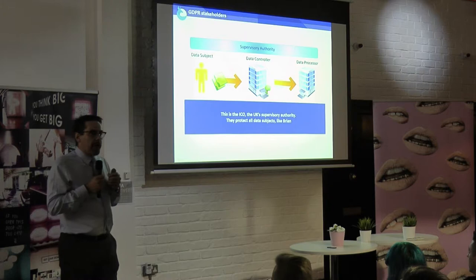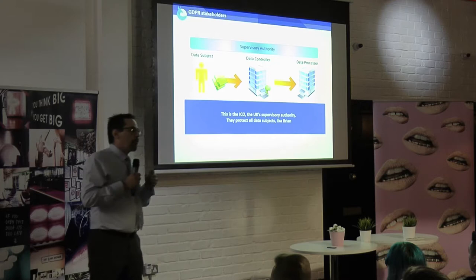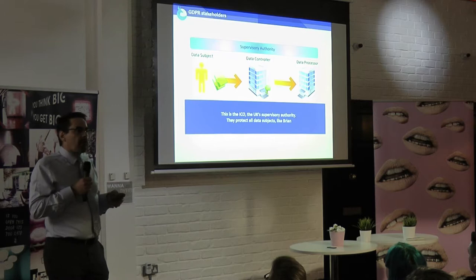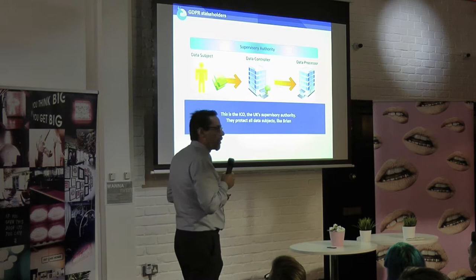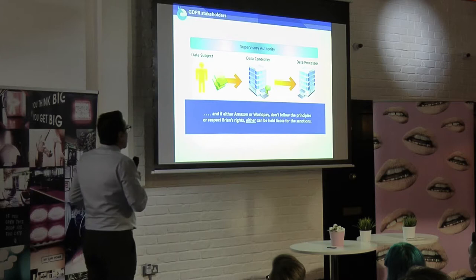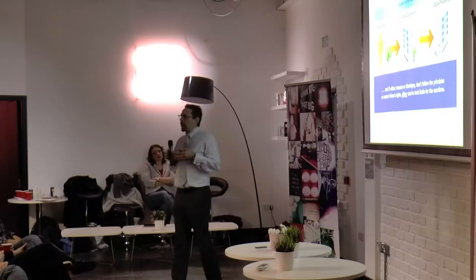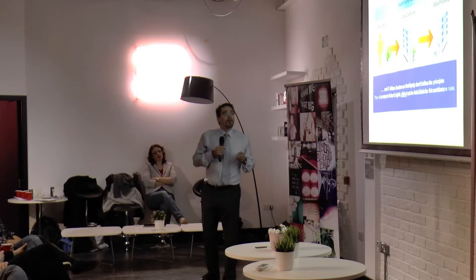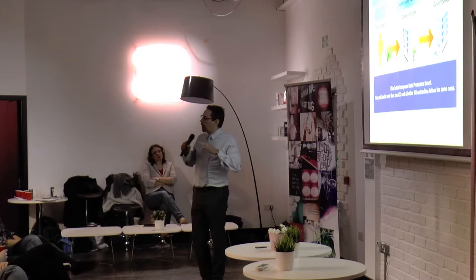Supervisory authorities are in place across Europe — in the UK that's the ICO. Their job is to look within the country, understand what's going on, monitor compliance, and make sure that things are working properly. The fact that we now have to prove compliance means they've got something to act on. They can come in and start auditing organisations. They've got the power to audit, to intervene, and to start sanctioning organisations. And it doesn't really matter if you're the data controller or the data processor — if you screw up with data protection, the supervisory authority can come to either party.